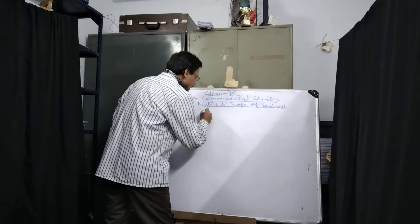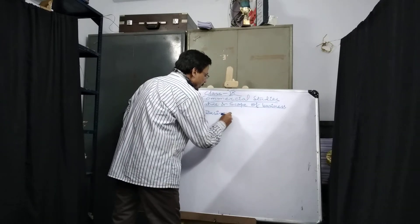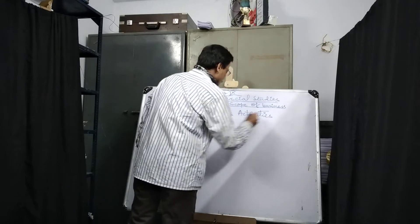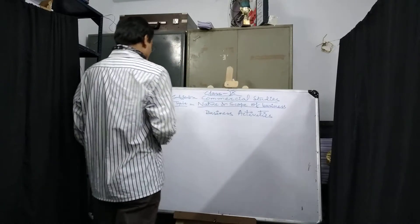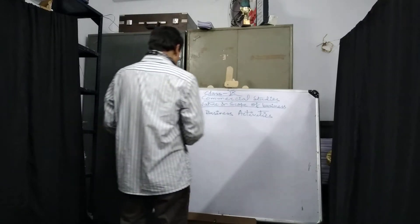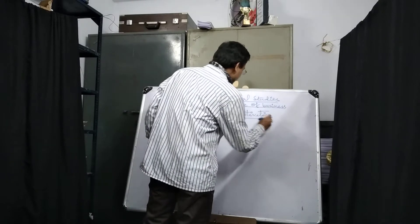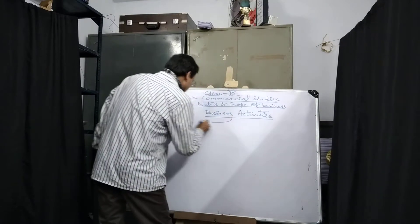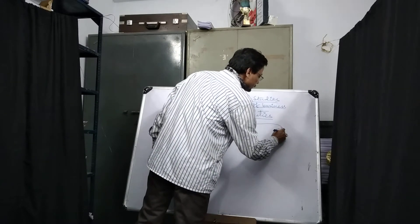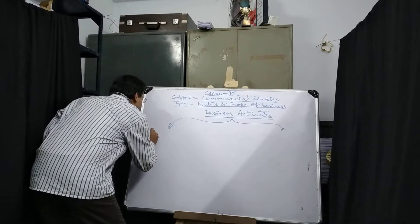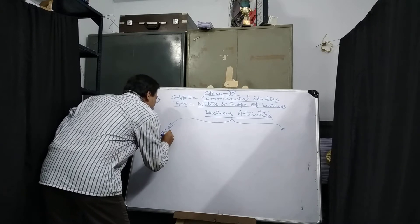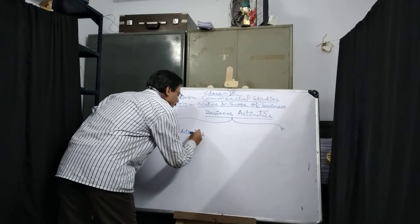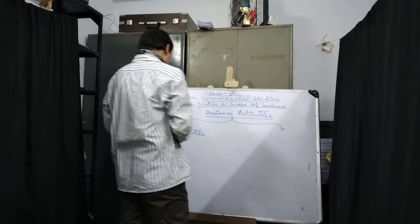In this class we will discuss the beginning of the chapter on business activities. Business activities have been divided into two parts. One is industrial activities and another is commercial activities.